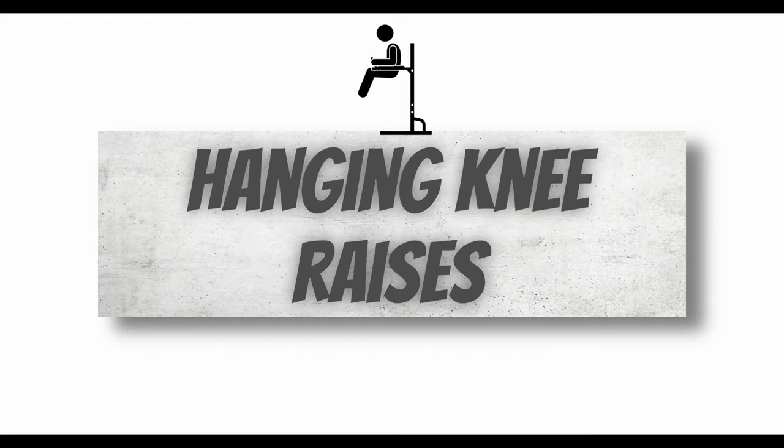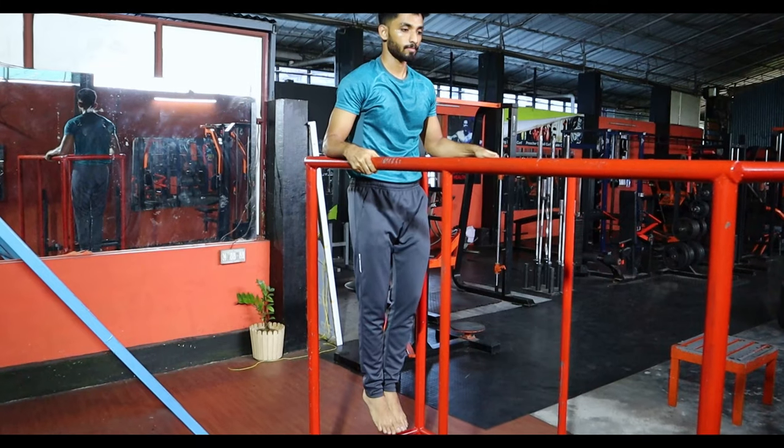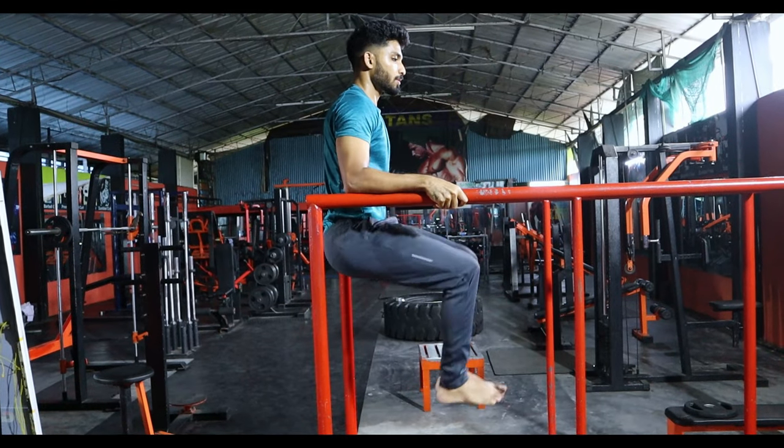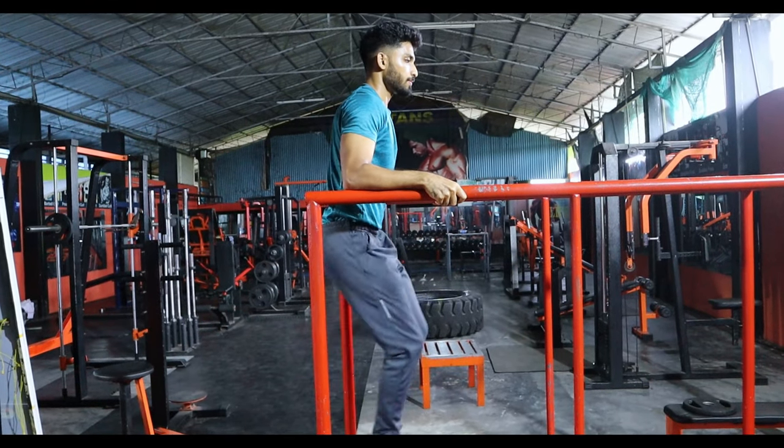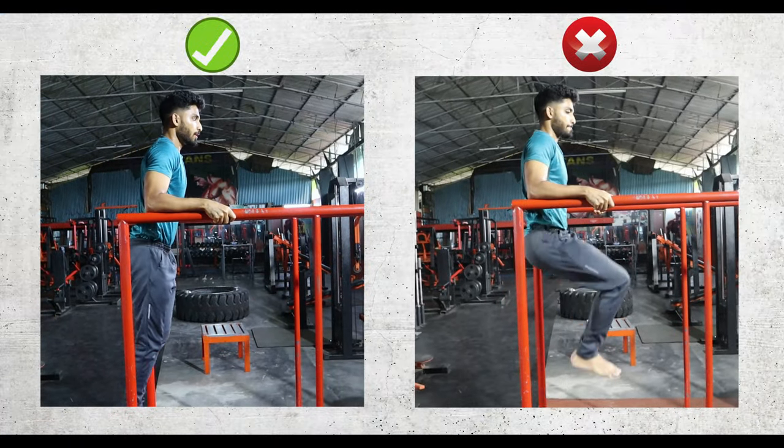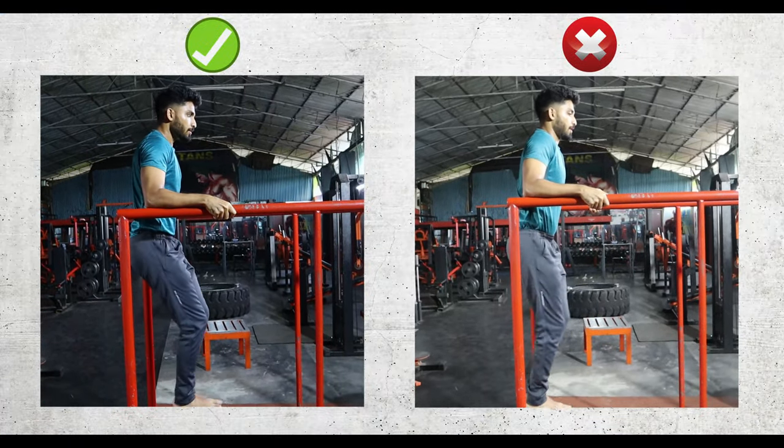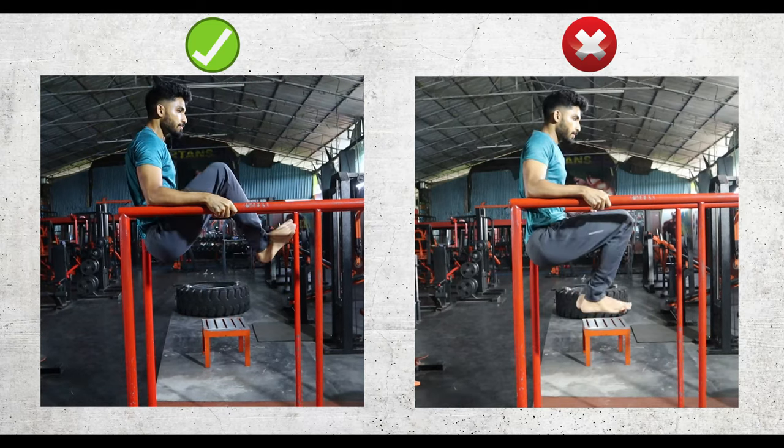The number one lower abs exercise is Hanging Knee Raises. You can use a pull-up bar or a dip machine for grip. This exercise helps work the lower abs. When doing hanging knee raises, you can do a lot of lower ab work per session.